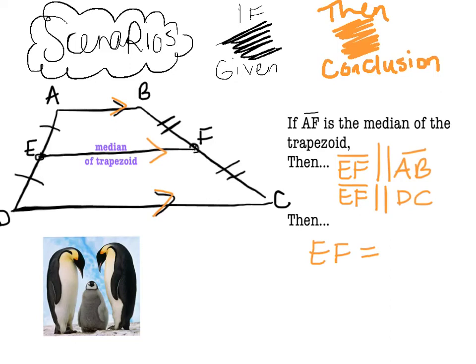is the average of the two bases. So AB and DC added together divided by 2 is the actual measurement of the median or EF.